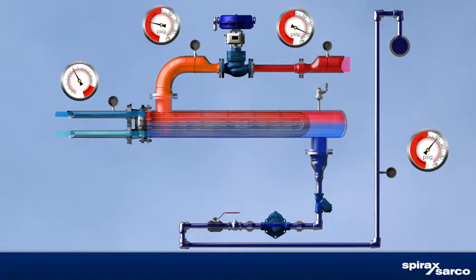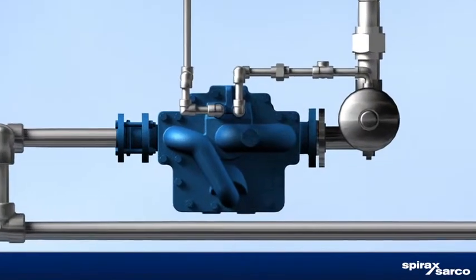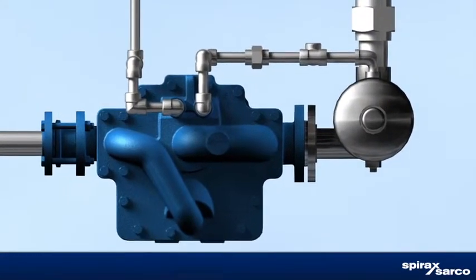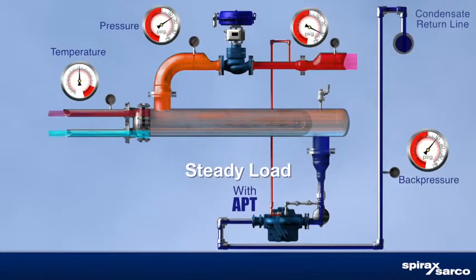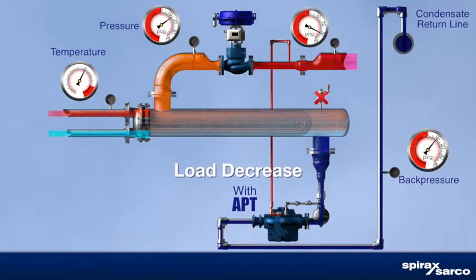The simplest way to cure stall is to install a steam powered automatic pump trap, such as a Spirax Sarco APT series. Pump trap operation is based on condensate level alone, with live steam pressure removing condensate under all load conditions, even vacuum.